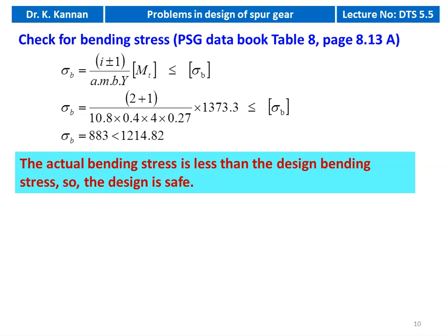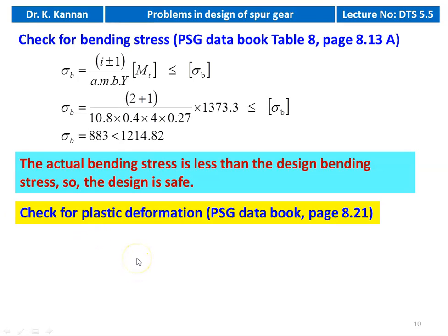These two are the checks: compressive stress and bending stress. If conditions are not satisfied, increase the face width B. If the check for plastic deformation is not asked in the university examination, you can stop here. For this first example, we also check for plastic deformation.